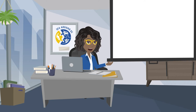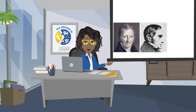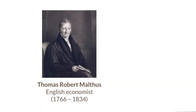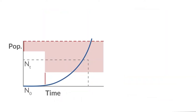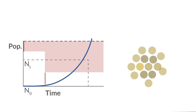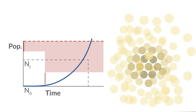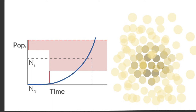First, you need to know about the contributions of three important people. The first one is Thomas Robert Malthus — the very person who wrote an essay on the principle of population. In his book, Malthus proposed a simple exponential growth model, which is based on the idea that each population has an intrinsic growth rate, which he estimated at about 2% per year for humans.